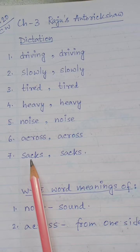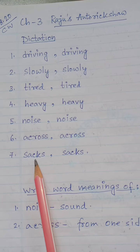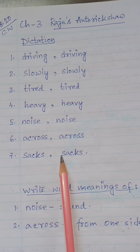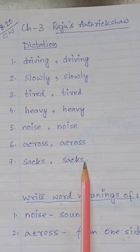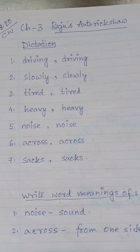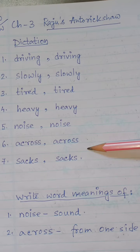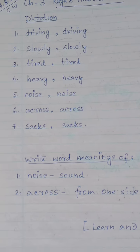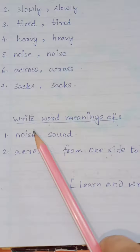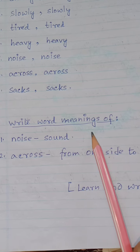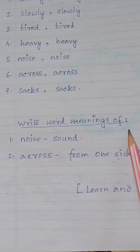Number seven. So, our dictation is done twice. Now come below and write the word meanings.